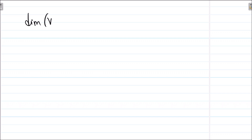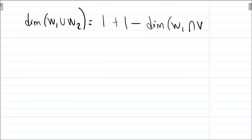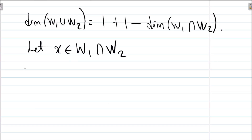So once we find dim(W1 ∪ W2), our job is done. By the inclusion-exclusion principle, dim(W1 ∪ W2) = dim(W1) + dim(W2) − dim(W1 ∩ W2). We need to determine dim(W1 ∩ W2).